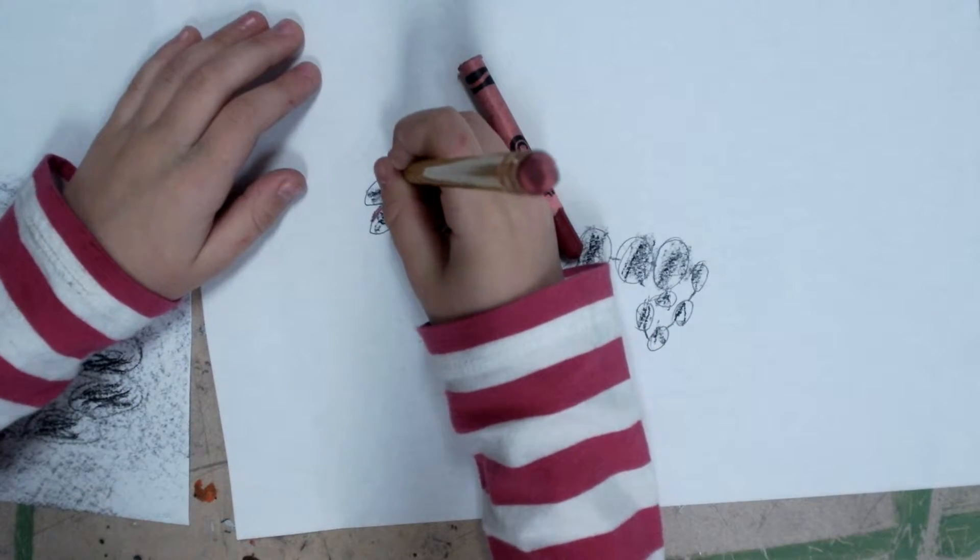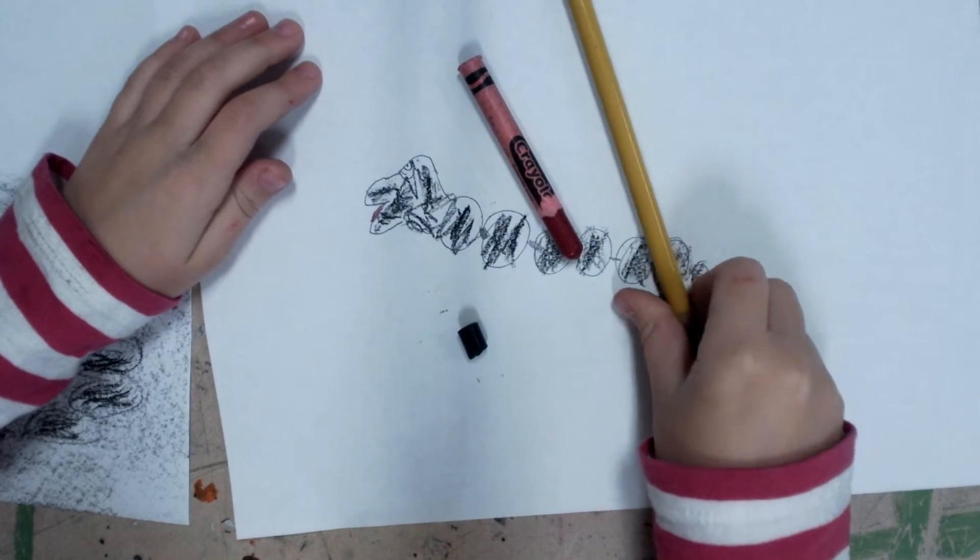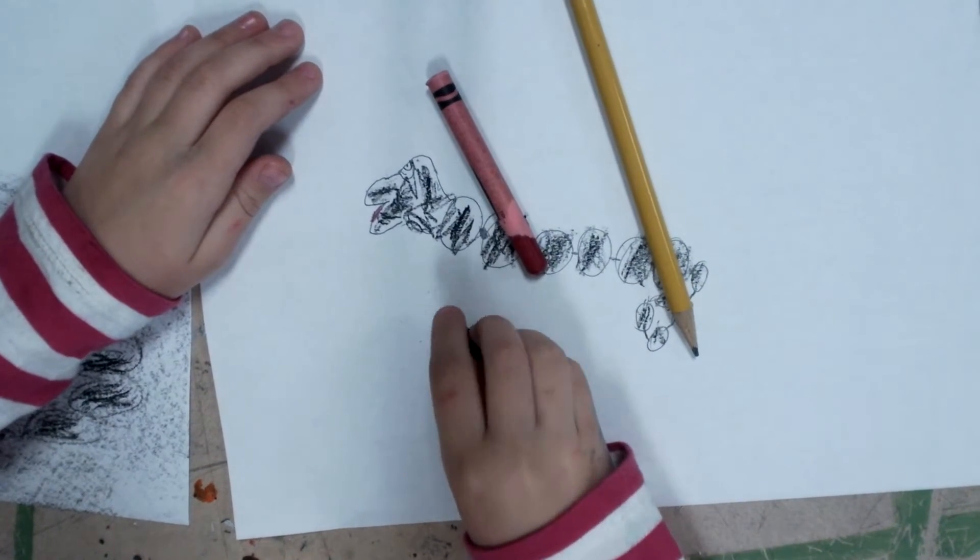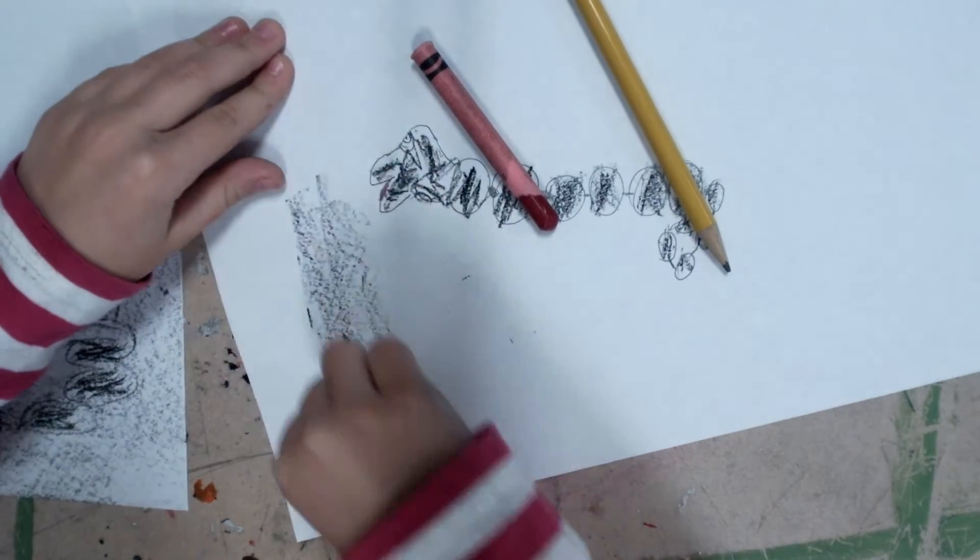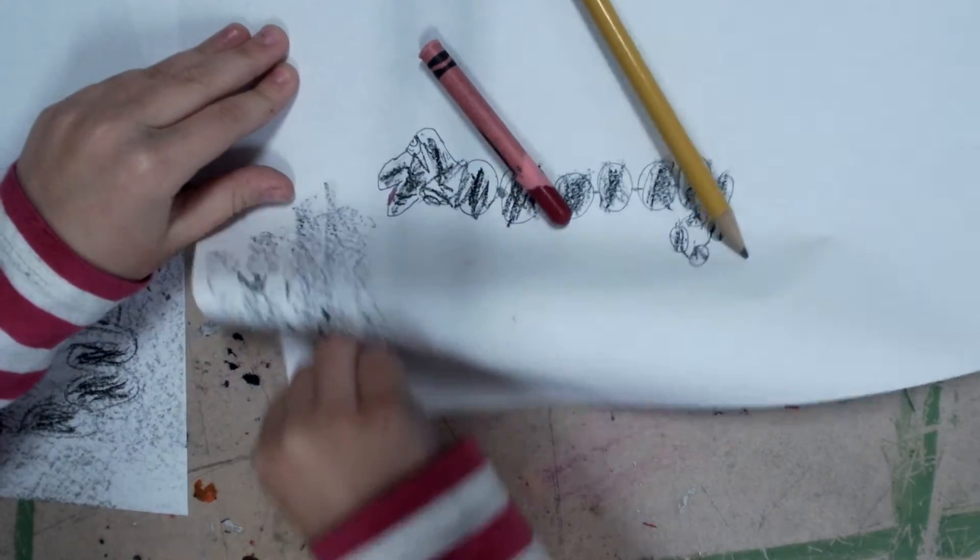Then what you're going to do is you're going to put a little dot like this to make them look stinky. To make the row, what you do is you just do this with a black crayon.